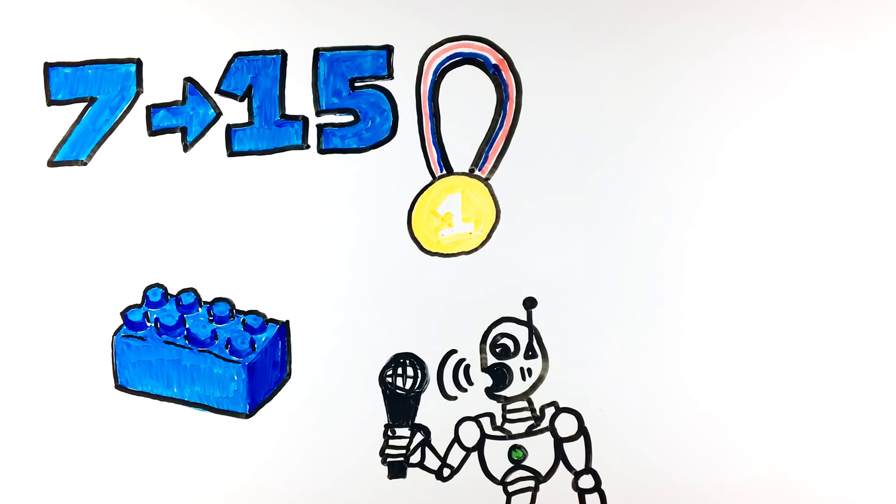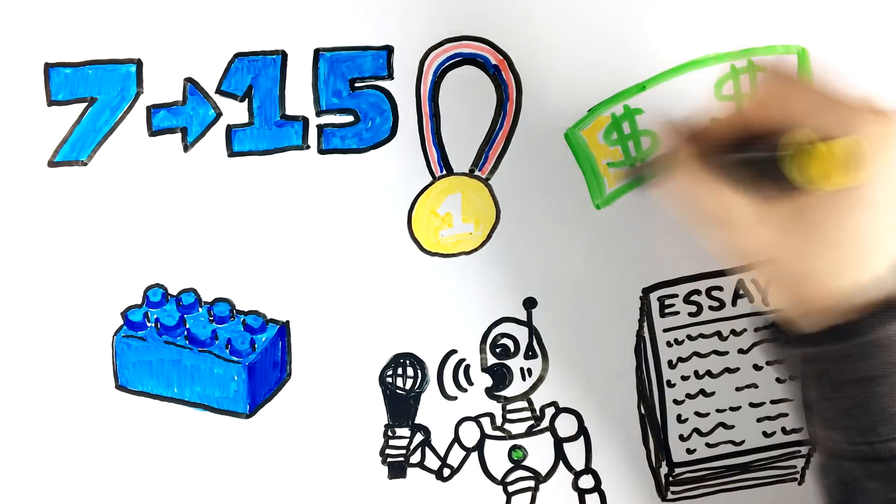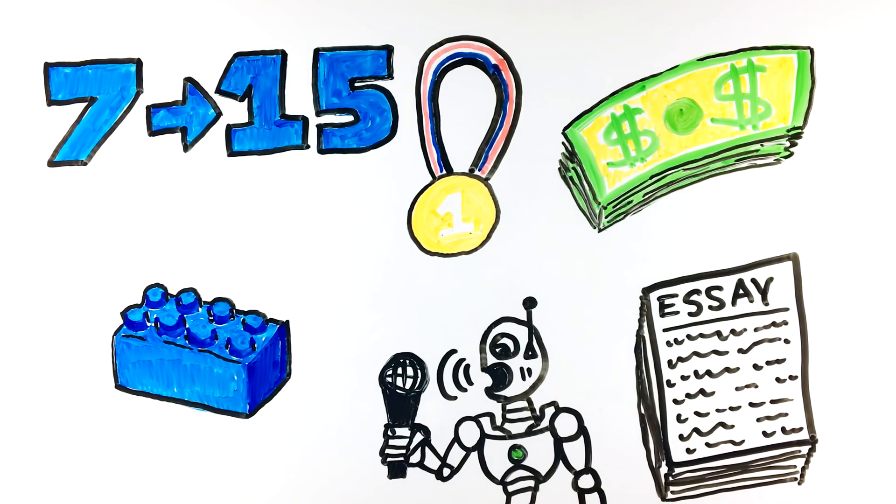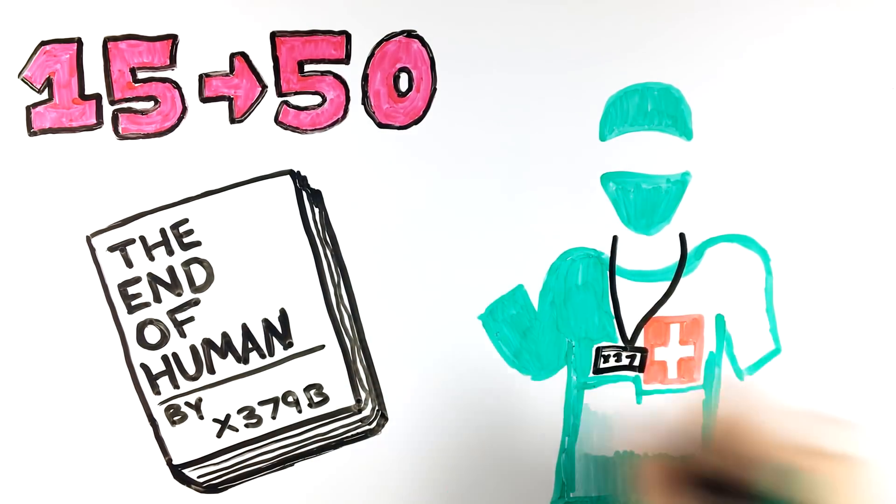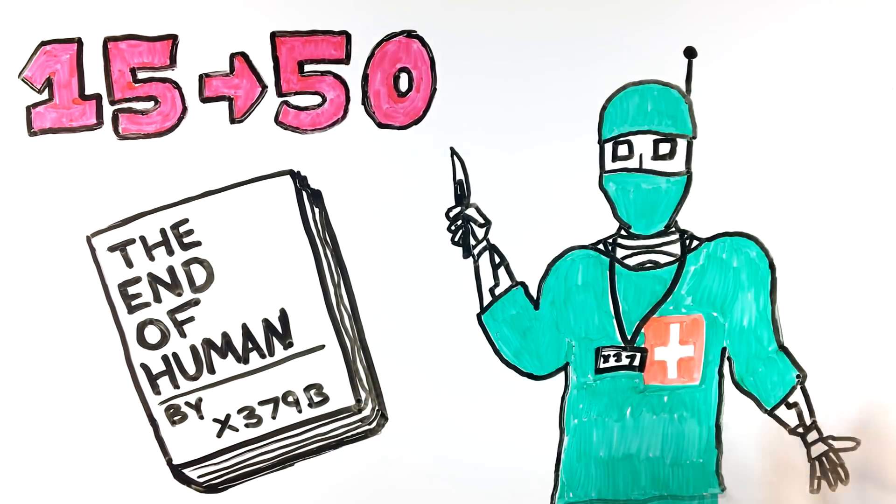It will even be able to generate perfect high school essays and replace a retail salesperson. In 15-50 years, AI will write a New York Times bestseller and be able to perform surgery, along with completing almost every other task and action better than a human.